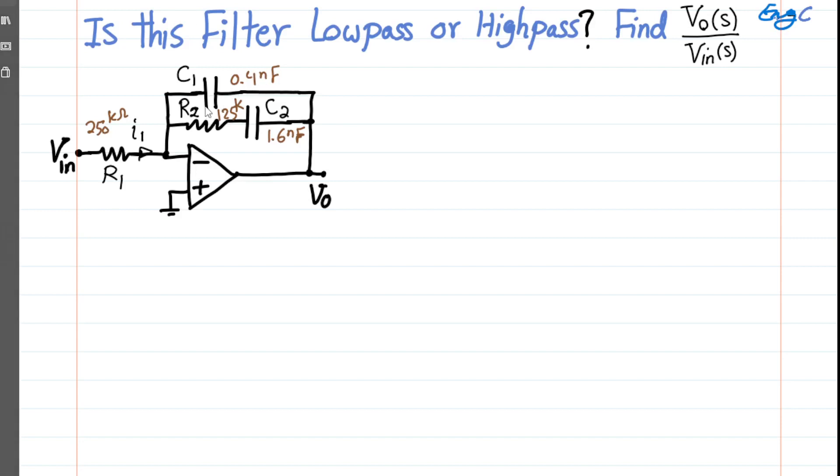A simple active filter is realized using one op amp, two capacitors, and two resistors in this circuit. We want to understand what it is doing and find the transfer function V_out over V_in. And then for the specific values of resistors and capacitors, find the poles and zeros.